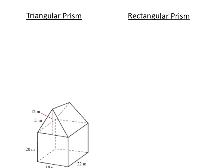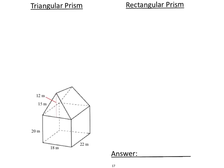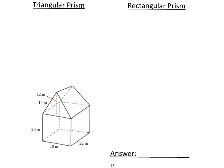For these examples, I went ahead and gave you the two figures that were used to make up the composite shape, so it's a little easier for you to reflect back on what we did. For the first one, the triangular prism, we have to remember that we have two congruent triangles. We're dealing with the base and height of the triangle: 12 times 18 divided by 2 gives us 108 meters squared, and there are two of them.